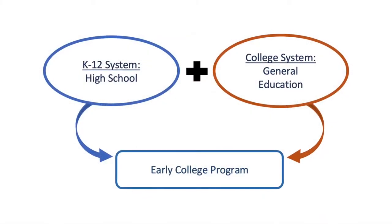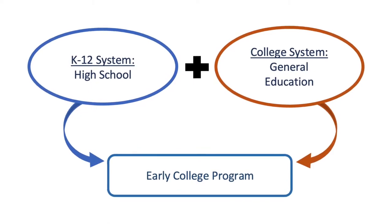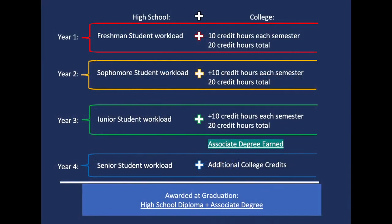We'd now like to introduce the early college program. The early college program takes the high school section of the K-12 system and integrates the general education section of the college system into it. As a result, early college students are able to take college-level courses that work toward earning an undergraduate degree. At the end of the program, if students are successful in reaching 60 college credit hours on or before their high school graduation date, they are awarded a high school diploma and an associate's degree simultaneously.